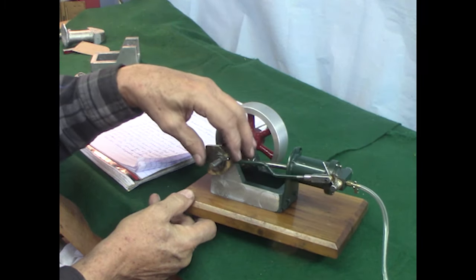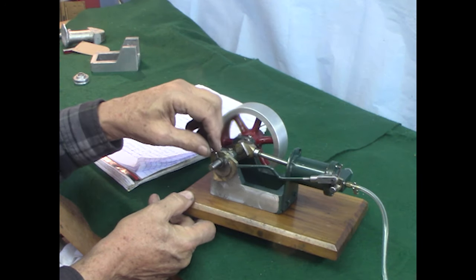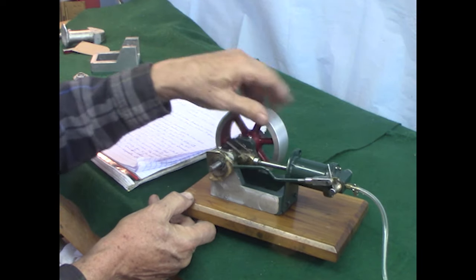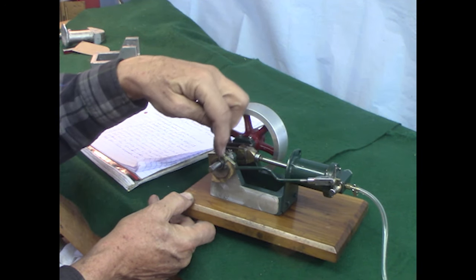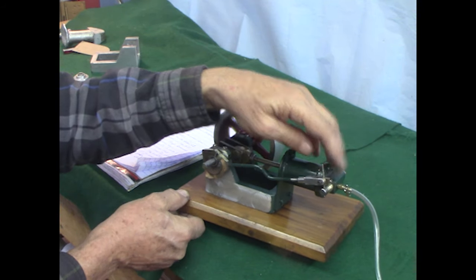It just allows easy access to adjust the timing with this screw here on the eccentric. The plans didn't have an eccentric, just had a crank 90 degrees to the other crank. So all the adjustment you had to do is here.